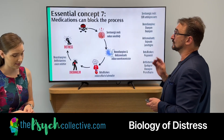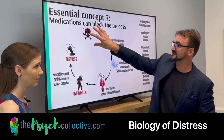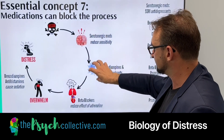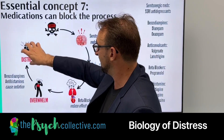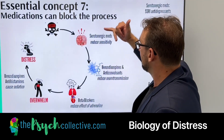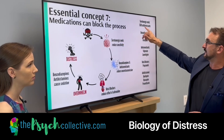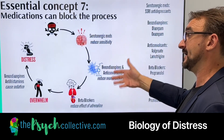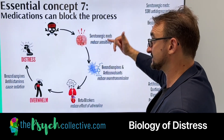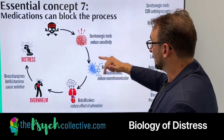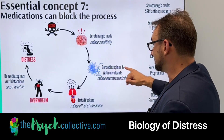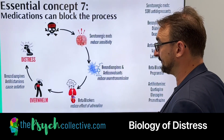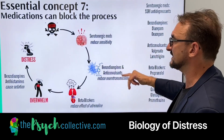Meds can block this distress process. Here's the process: danger → snap judgment about the danger → nervous system activates → breathing increases → feeling overwhelmed → distressed. Medications like the so-called antidepressants actually reduce sensitivity, so they can dampen down this process. That's why people with panic disorder and anxiety often do better — at least for a while — when they're on these medications. You can reduce the nervous system activity with sedatives like benzodiazepines or anticonvulsants, which reduce the nerve communication signal. But essentially you're being sedated all the time just in case you get distressed.